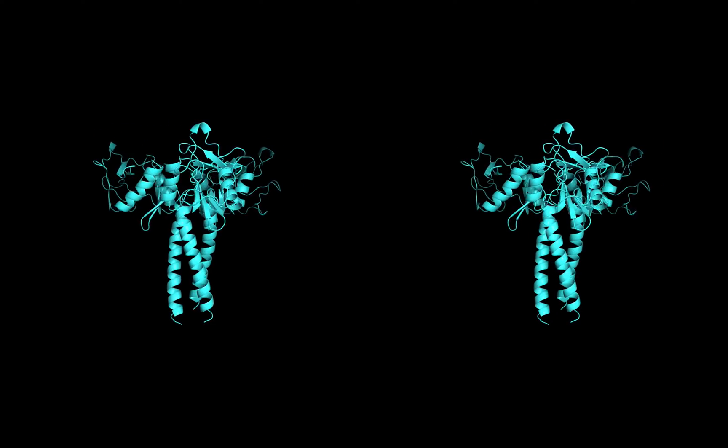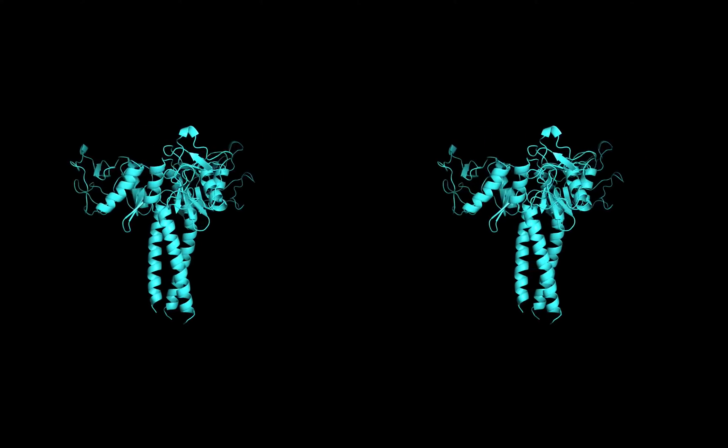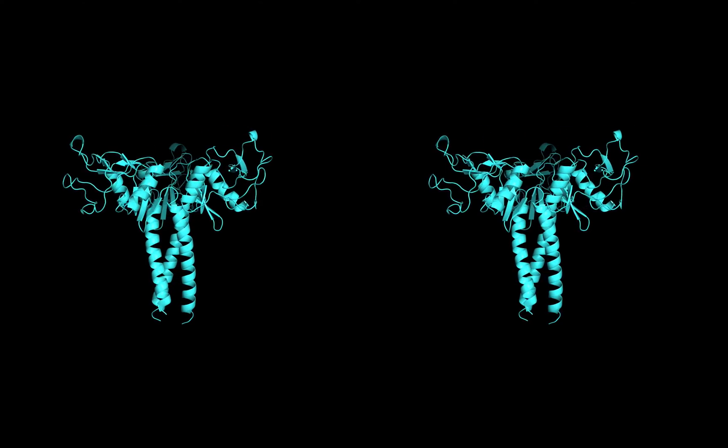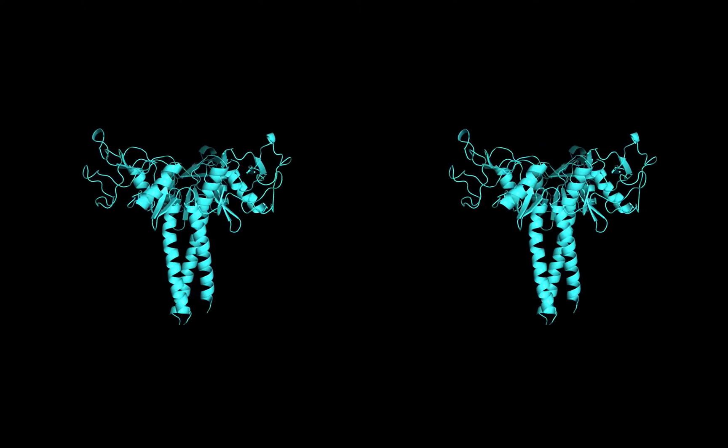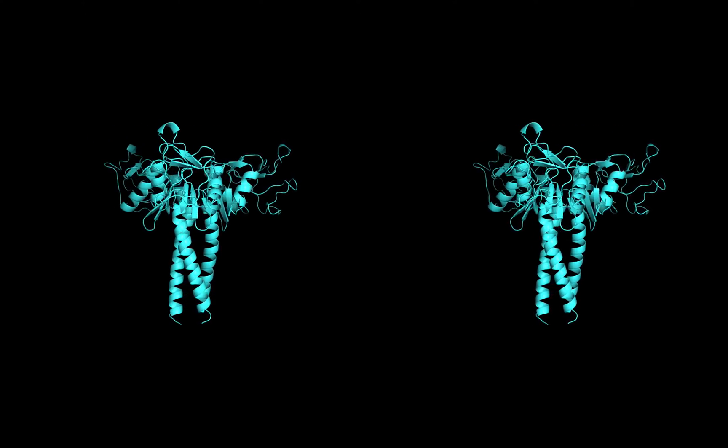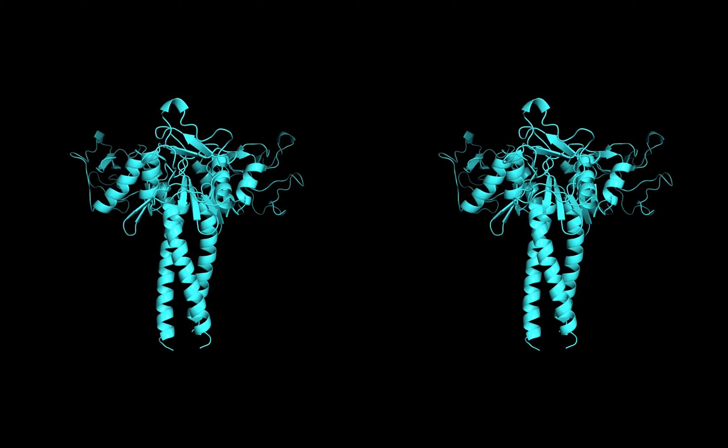The way that many proteins are rendered for textbooks and journal articles is the ribbon diagram. Though we're losing the detail of the side chain atoms, we're seeing the overall structure of the protein very easily, along with the alpha helices and beta sheets that make up the secondary structure.